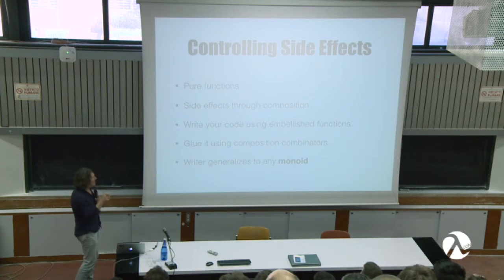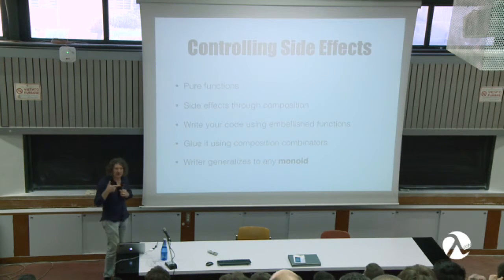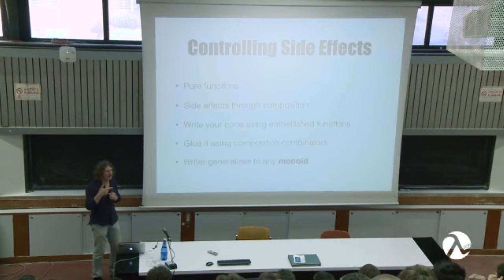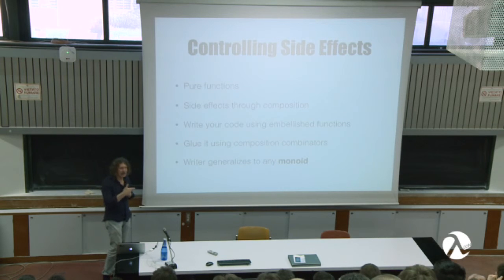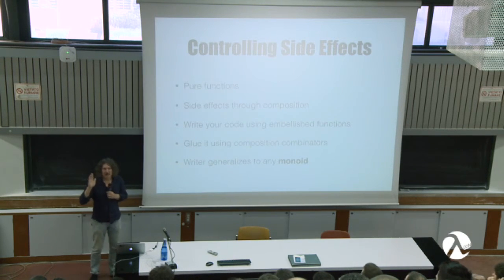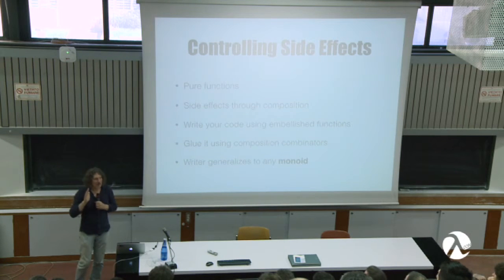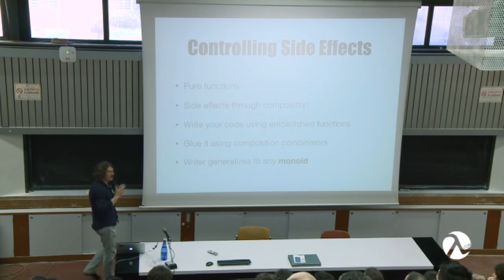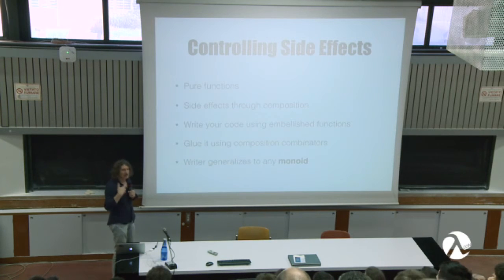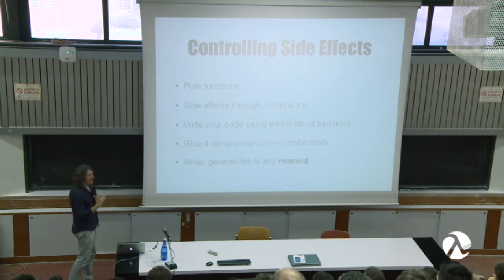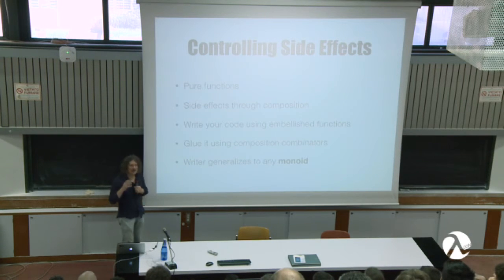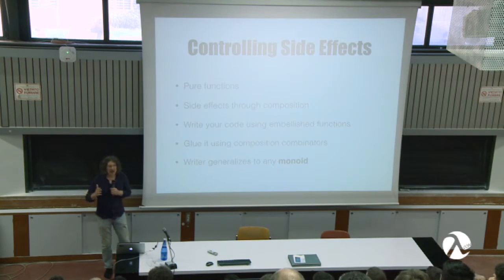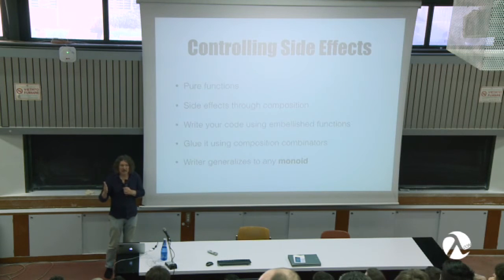What happened here is we found a way of controlling side effects. It's a funny way because we have pure functions, and side effects happen also in a pure way, but they happen in the composition — they happen in between. So we have suddenly discovered a new dimension to programming we were not thinking about. We think about functions, types, data — but there is this orthogonal dimension of how we compose functions. It turns out we have a lot of freedom in how we compose functions, how we glue them together, and this generalizes in many directions.